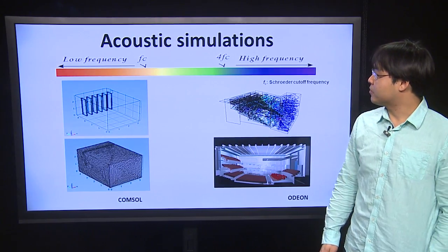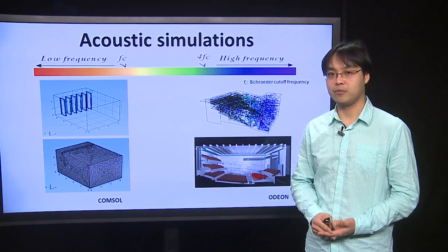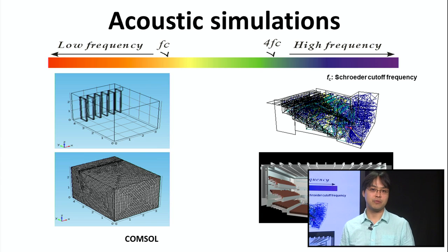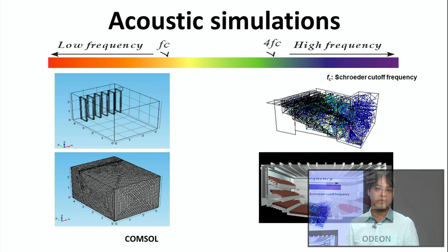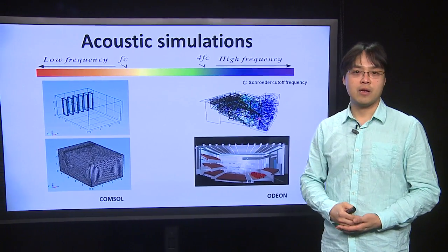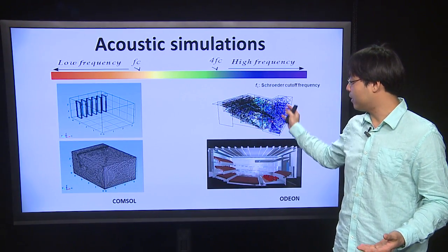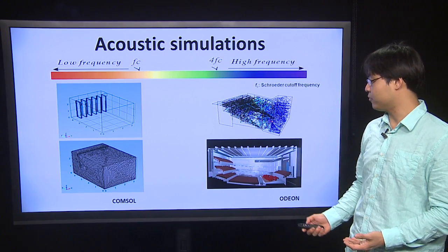There are many acoustic simulations to predict the acoustic conditions depending on frequency, size of the room, and the type of room. At low frequency, for example in small rooms, we can directly solve the wave equation using finite element simulation and boundary element simulation. At high frequency in large spaces, we cannot directly solve the wave equation because it takes too much time. Instead, we replace the wave propagation with the propagation of rays emitted from a source and trace all the rays to estimate the acoustic conditions. That's called geometrical acoustic simulation.